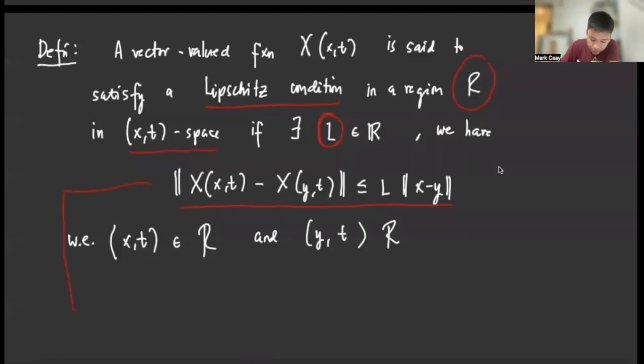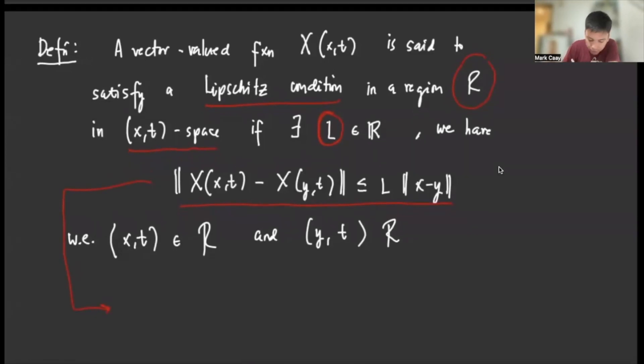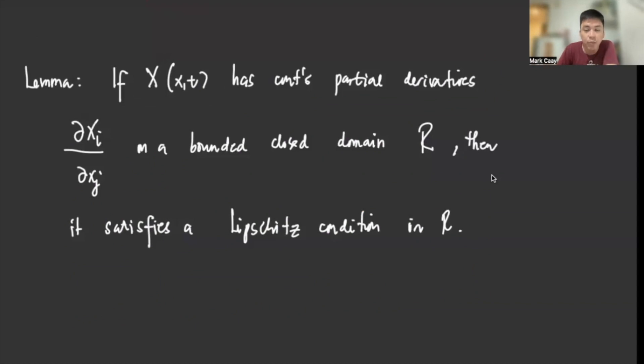When we relate this to a differential equation, in the uniqueness and existence theorem, we have ||X(x,t₁) - X(y,t₁)|| ≤ L||x - y||. So this is the reflection of our Lipschitz conditions whenever this space is inside the region R. Okay, so we have this lemma, and we will apply this lemma in order for us to identify the Lipschitz conditions in our differential equation.